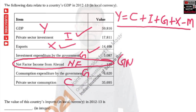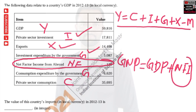Net factor income from abroad is actually a component of GNP. If we were to calculate GNP, then we use net factor income from abroad, because GNP equals GDP plus net factor income from abroad. Net factor income is the net income earned by domestic residents from abroad minus net income earned by foreign residents from domestic investment. Since we are calculating GDP, we do not use this term.